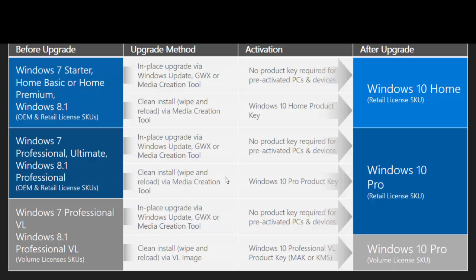Looking at the upgrade paths: for the free upgrade path, Windows 7 Starter, Home Basic, or Home Premium, or Windows 8.1 OEM and Retail SKUs, will be presented with the upgrade option via Windows Update. These machines won't be domain joined, so these users, if they opted in, would have been presented with Windows 10 upgrade capabilities right from the beginning.